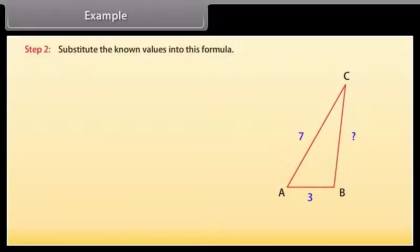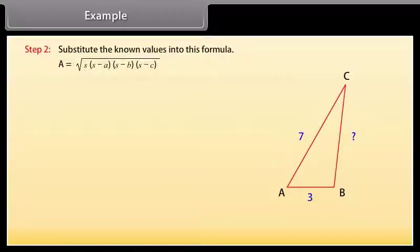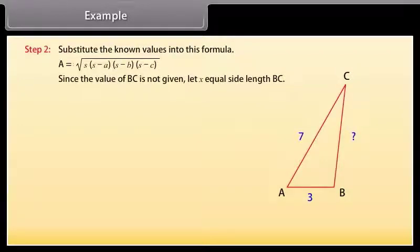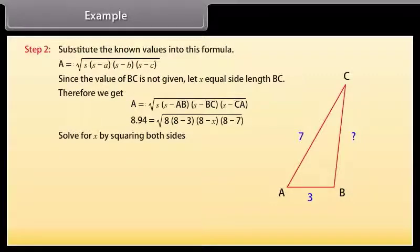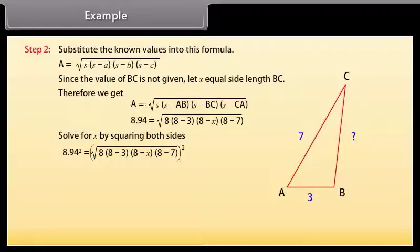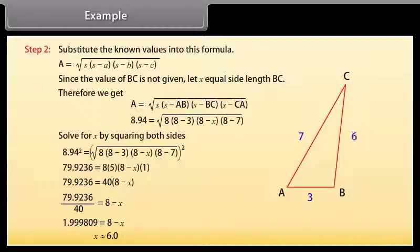Step 2: Substitute the known values into the formula A = √(S × (S − A) × (S − B) × (S − C)). Since the value of BC is not given, let X be the length BC. Therefore, by substituting the values, we get 8.94 = √(8 × (8 − 3) × (8 − X) × (8 − 7)). Now solve for X by squaring both sides. We get 8.94² = 8 × (8 − 3) × (8 − X) × (8 − 7). By calculating it, we get X is approximately equal to 6.0.